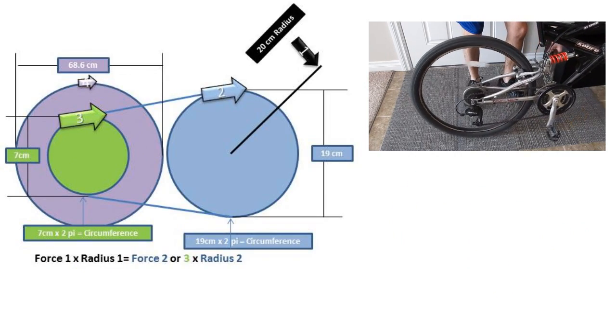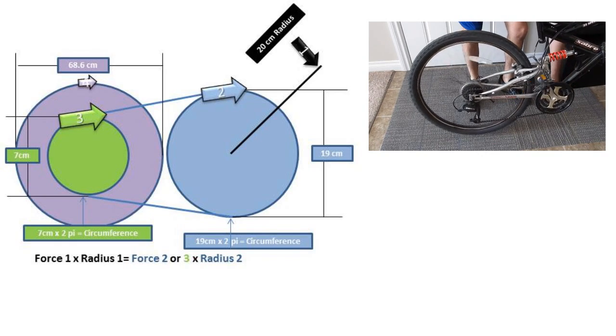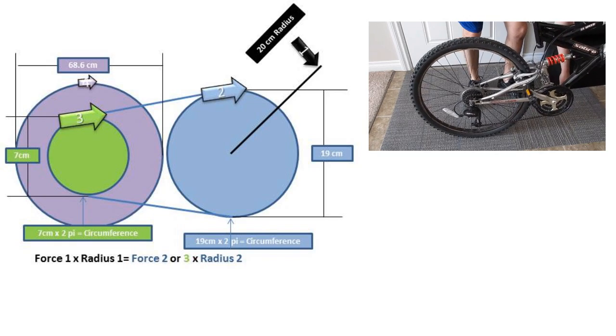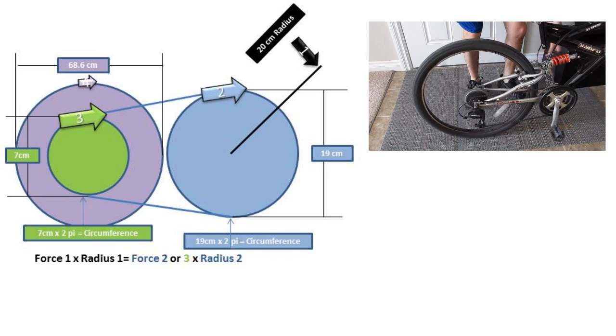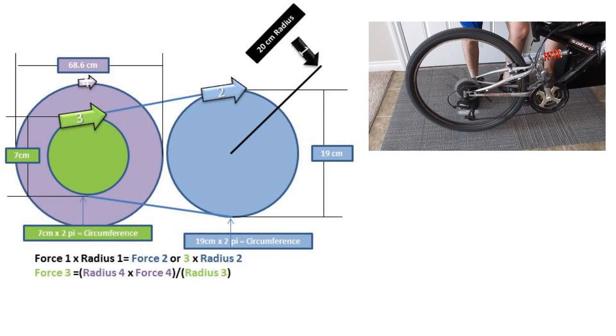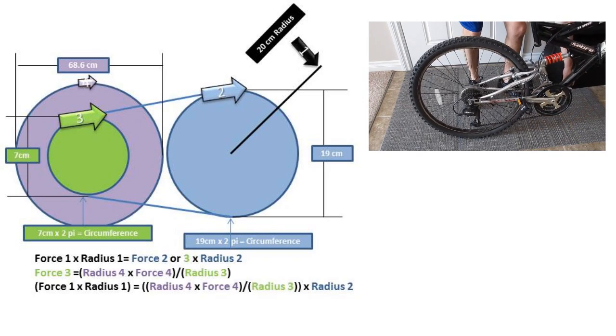Now to wrap things up, to solve for how much force is applied to the ground, we can take the first torque equation of force 1 times radius 1 equals force 2 times radius 2. Recall that force 2 and force 3 are equal, so we will swap out force 2 for force 3. We can then take the equation of force 3 equals radius 4 times force 4 over radius 3 and substitute it into the first equation.